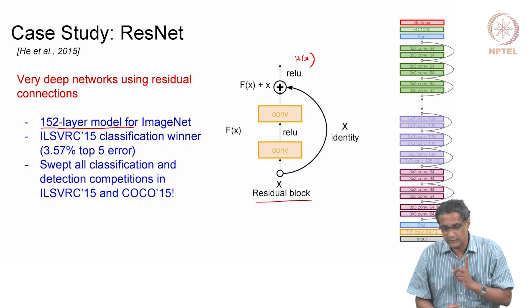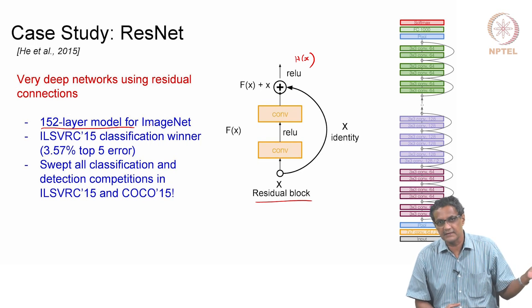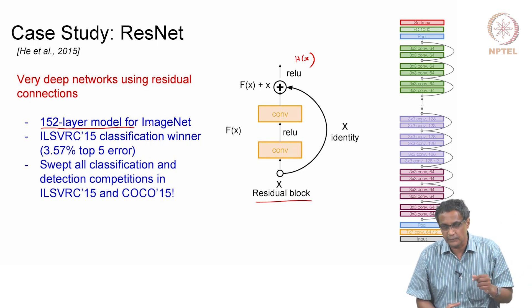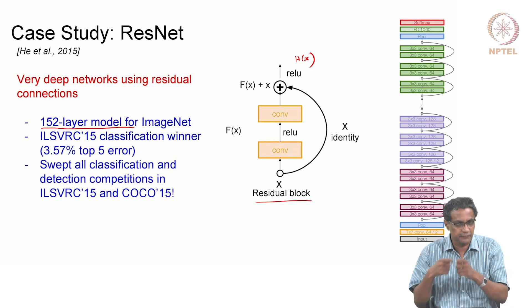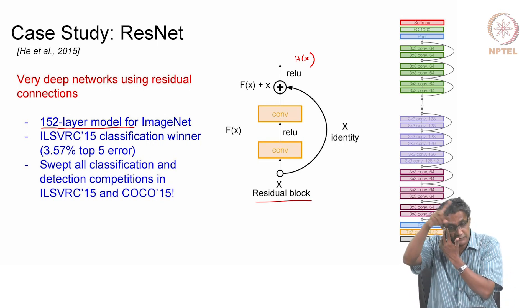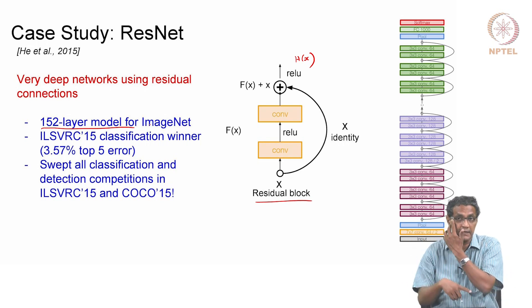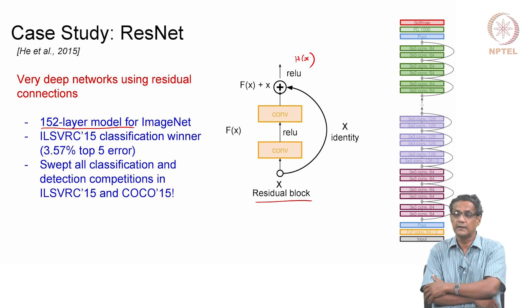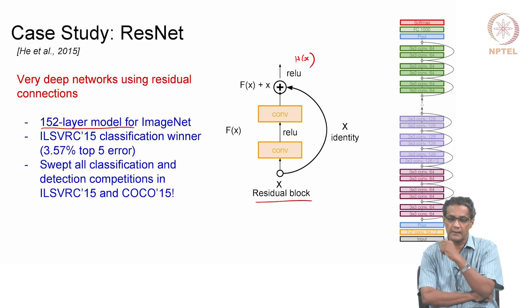One way to think about it is, just as in the other one you had an alternate path, you would actually think that if you gave an alternate path, maybe you could still make sure that the gradients do not die down.